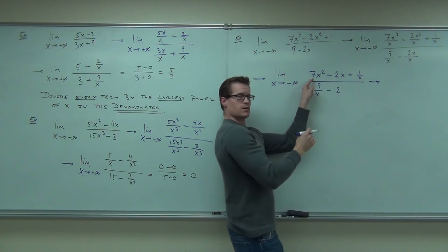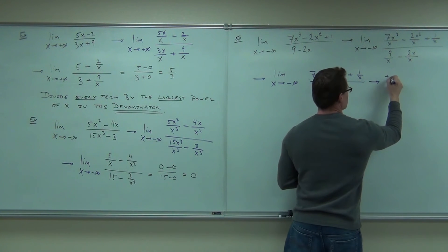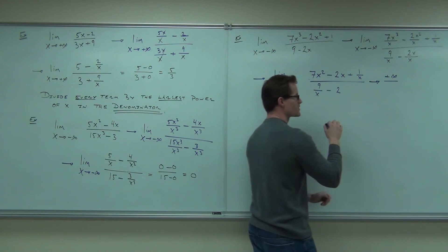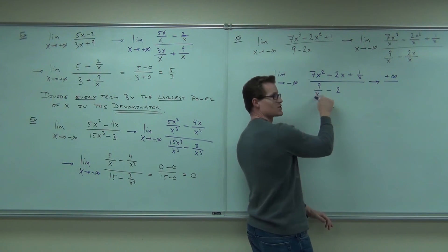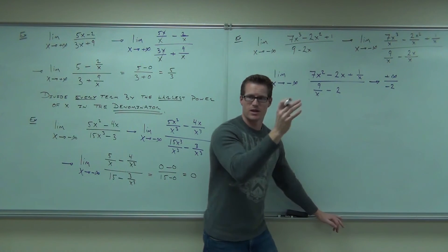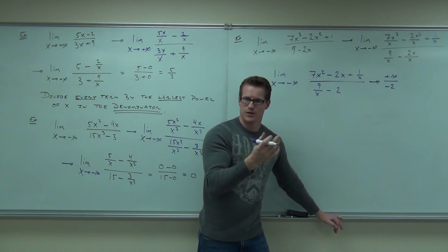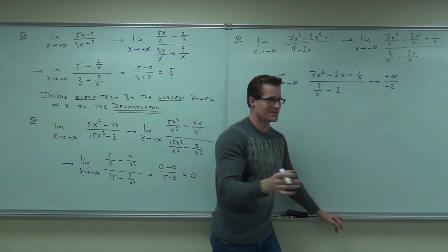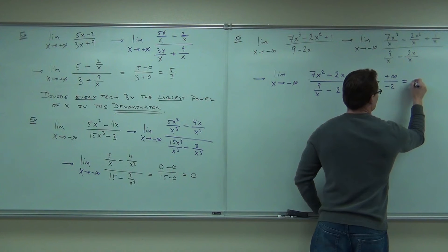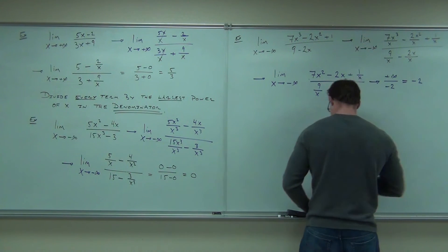You understand that went to positive infinity? A little unorthodox here, but you see this goes to 0. Negative 2 doesn't change. Positive divided by negative is a? Infinity divided by 2? Still infinity. Now, mathematically, it doesn't do that.